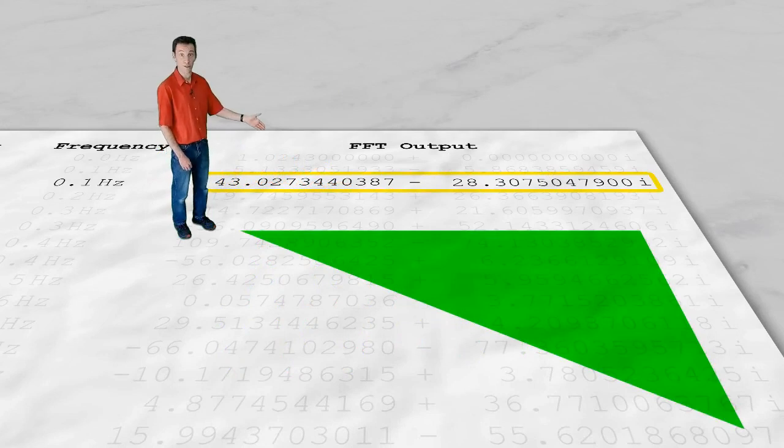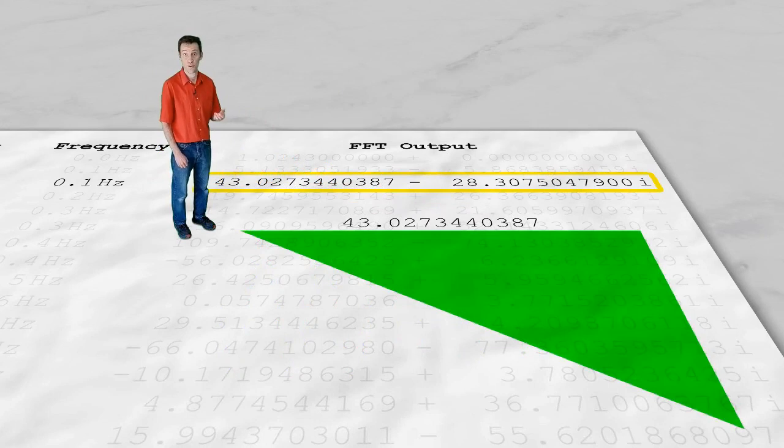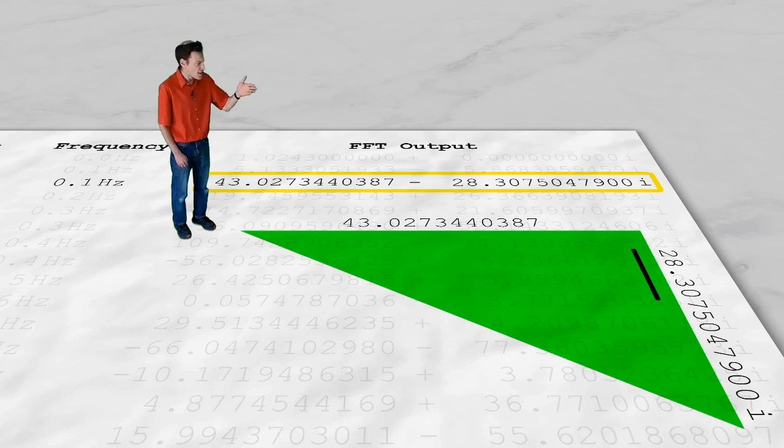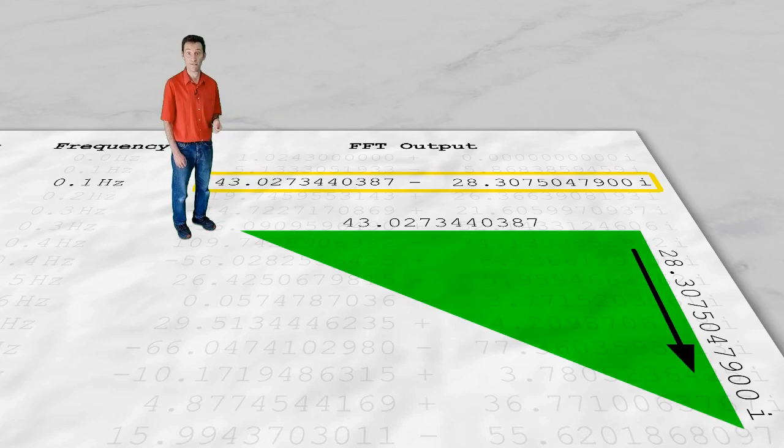Let's make the width of the triangle equal to the real part of the complex number, representing the amplitude of the cosine wave. And let's make the height of the triangle equal to the imaginary part of the complex number, representing the amplitude of the sine wave. Notice the direction of the line. The amplitude of this particular sine wave is negative.